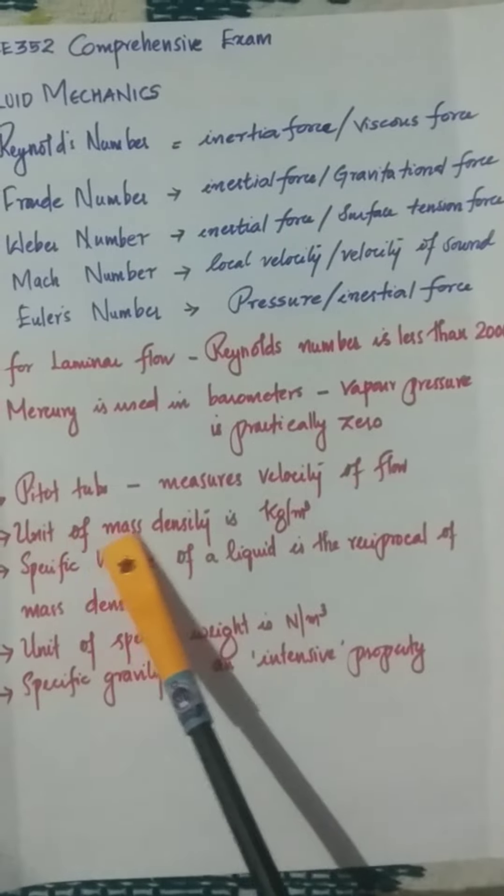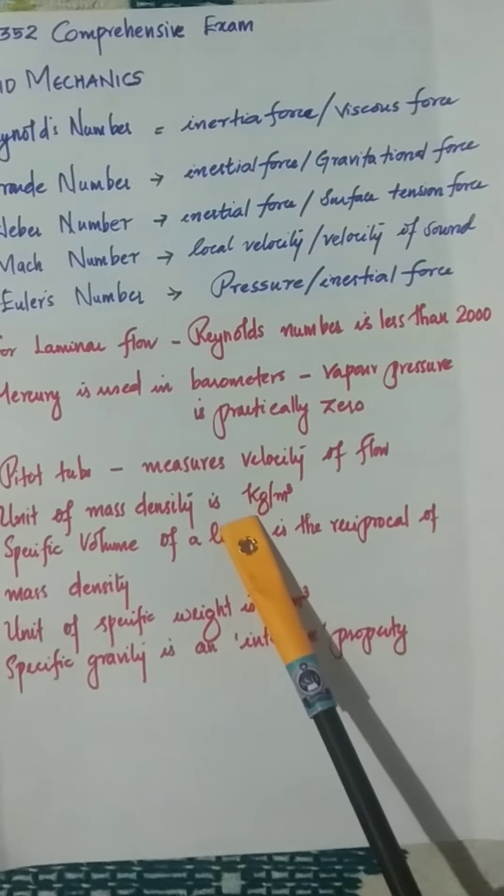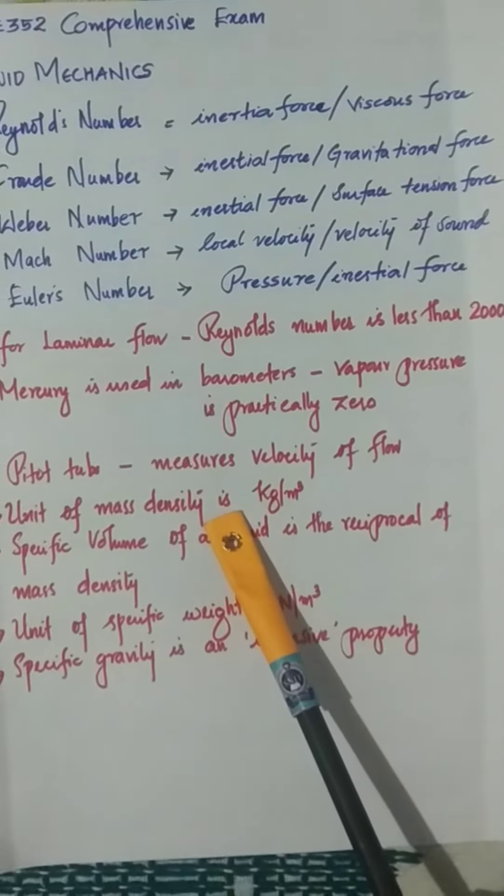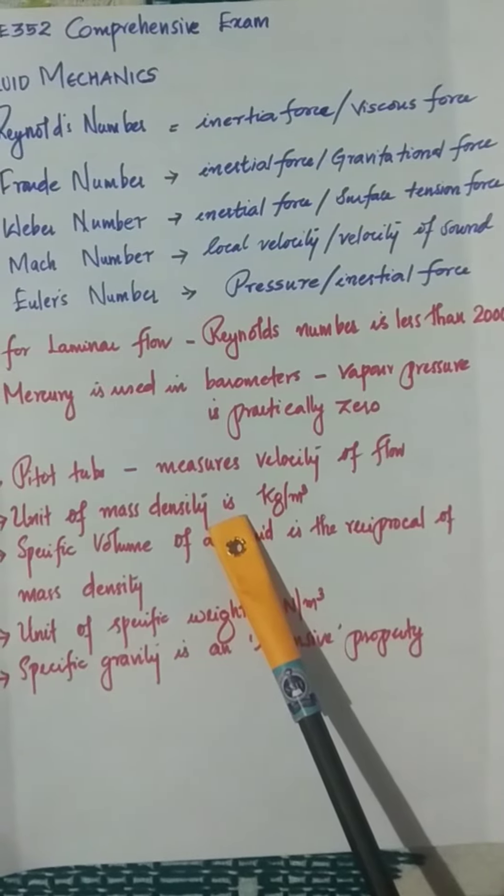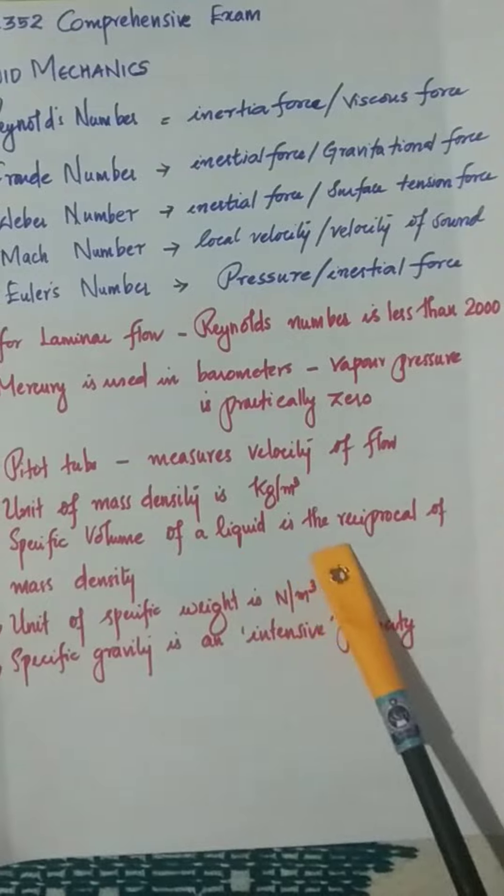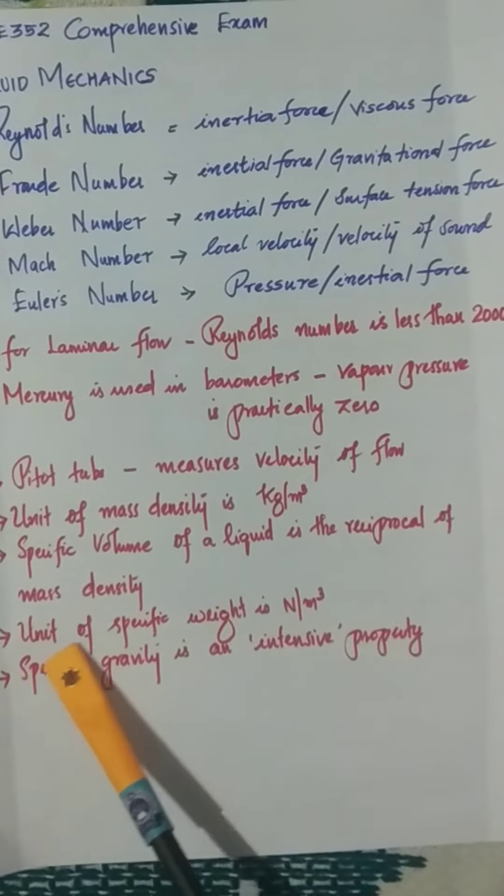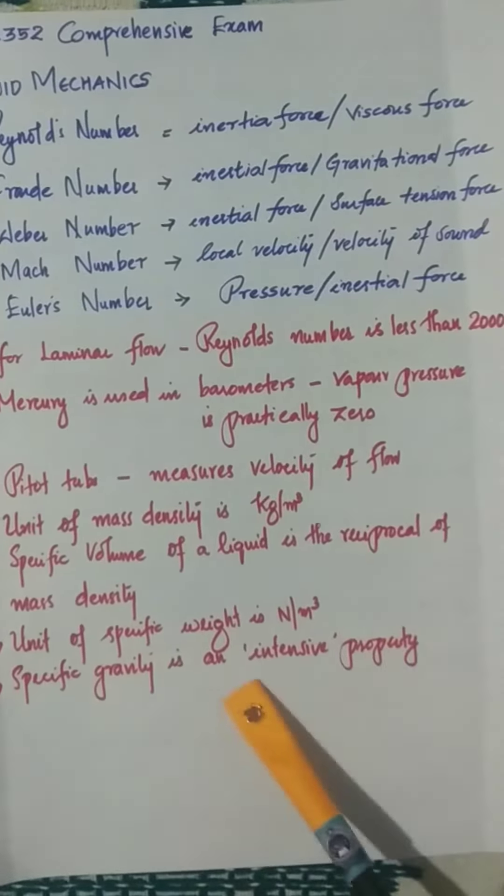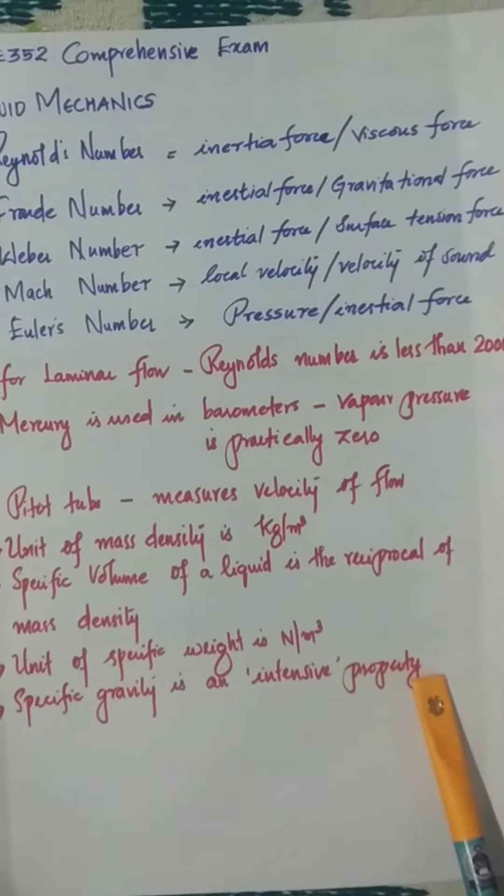The unit of mass density is kilogram per meter cube. Specific volume of a liquid is the reciprocal of mass density. The unit of specific gravity is Newton per meter cube, and specific gravity is an intensive property. So you need to think about what all are the extensive properties.